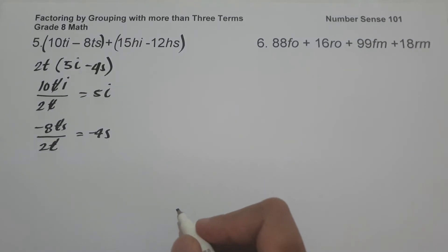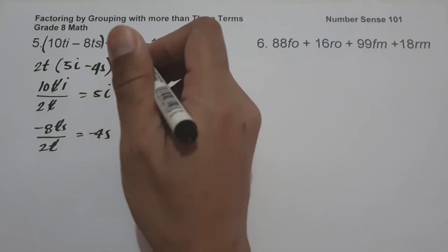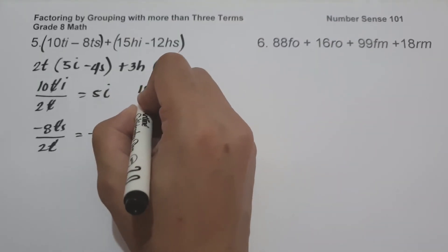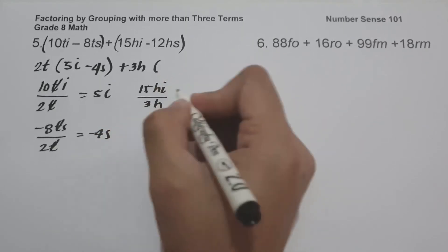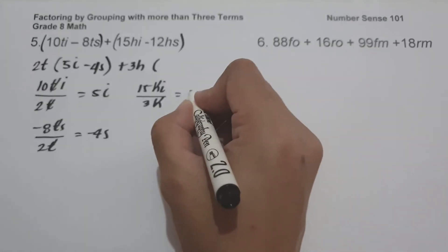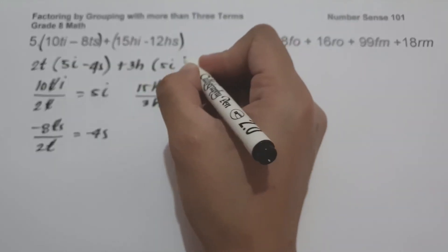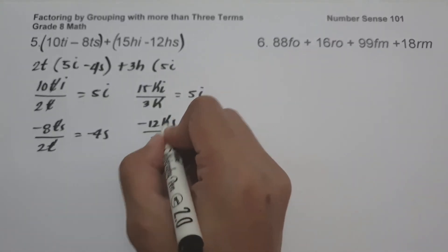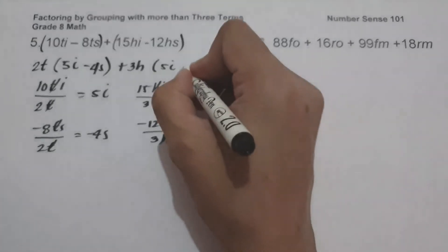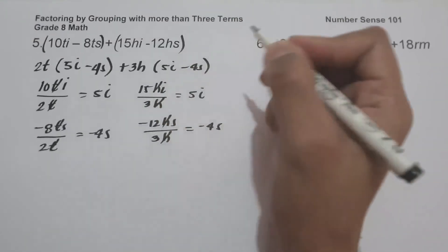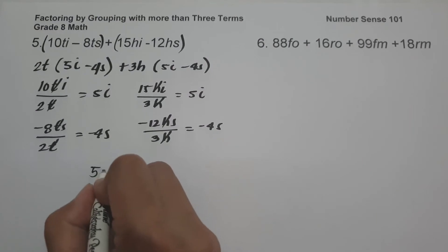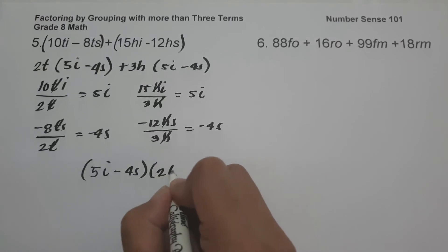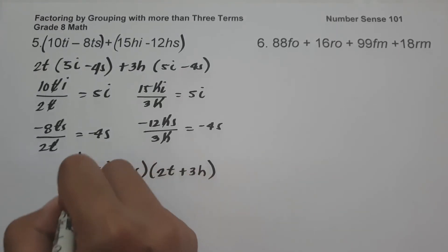The greatest common factor of 15HI and negative 12HS is 3H. So 15HI divided by 3H: cancel H, giving 5I. Then negative 12HS divided by 3H: cancel, giving negative 4S. Therefore, the answer is (5I minus 4S) times the quantity (2T plus 3H).